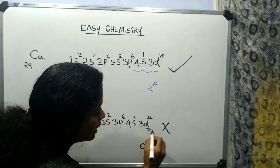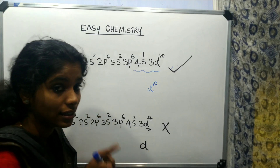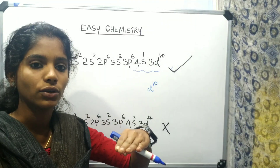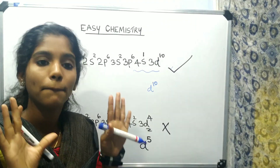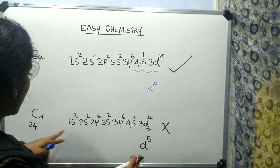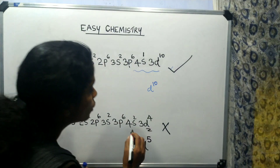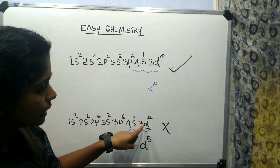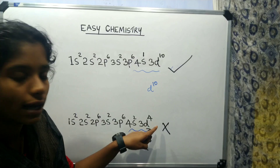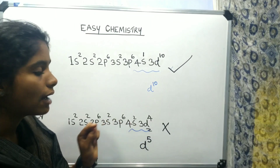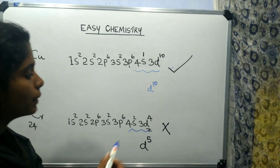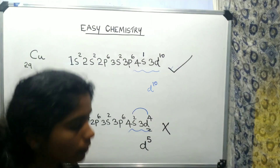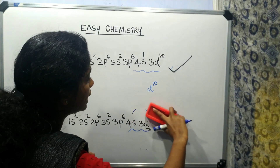Chromium has a D sub-shell. The D sub-shell maximum capacity is 10 electrons. When chromium has 3d4, that is only 4 electrons — it is not fully filled and not half-filled either. The idea is that 4s2 and 3d4 need to be reconsidered. One electron can move from 4s2 to 3d4.